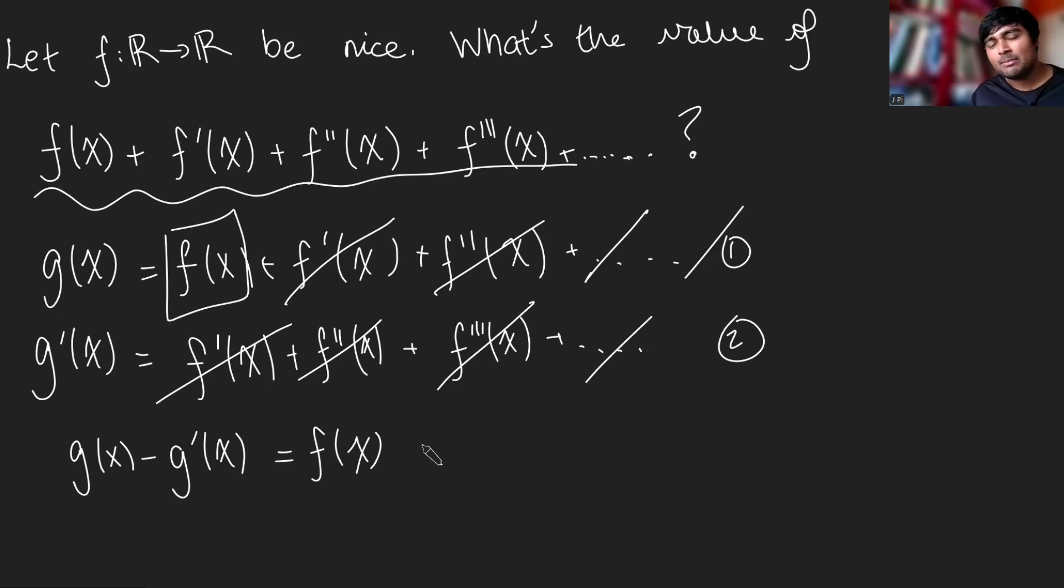And so if I just multiply both sides by minus one, I get g'(x) - g(x) = -f(x). Okay, cool. Now, this is just a differential equation in terms of g. We've got dg/dx - g(x) = -f(x). And in fact, this is quite nice.